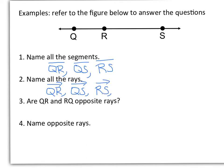I could also start with endpoint S and go to the left and have ray SR, and finally ray SQ. So you notice we have 6 rays there.